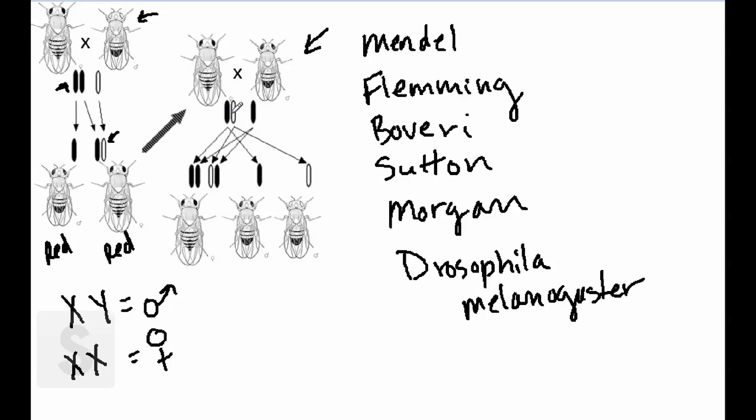Morgan did thousands and thousands of breeding experiments, and this let him follow the inheritance of these mutations through many generations. And this gave the scientific proof that chromosomes carry the genetic material that in fact control what an organism looks like.